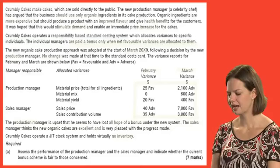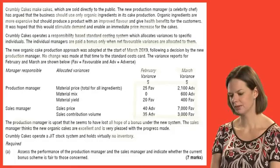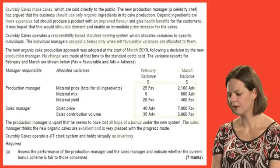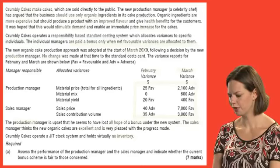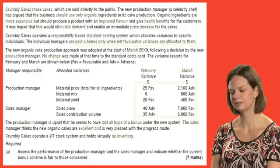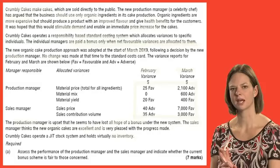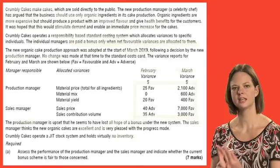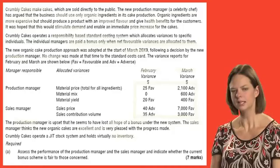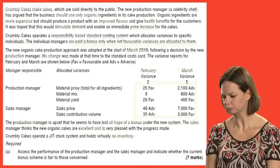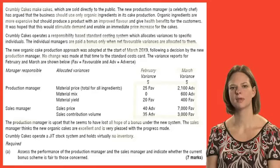The production manager is upset that he's lost all hope of a bonus under the system, yet the sales manager thinks it's excellent, and we're also told they have no inventory. The detailed requirement asks us to assess the performance of the production manager and the sales manager and indicate whether the current bonus scheme is fair. So we've got two things to do: assess the performance of both managers and comment on whether the bonus system is fair. With seven marks available, we need to come up with about seven well-explained points.